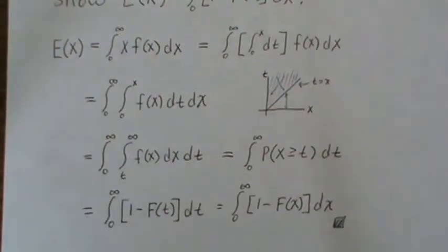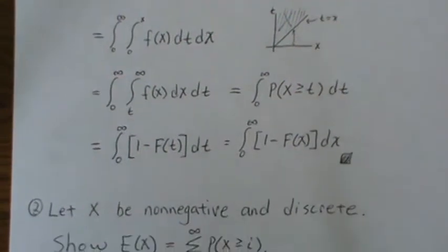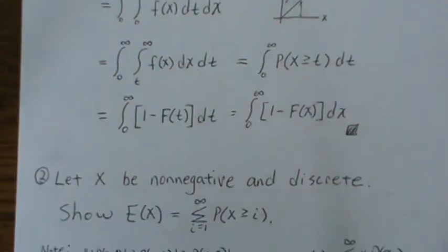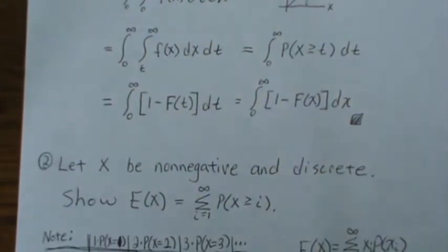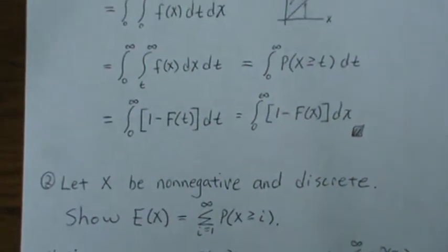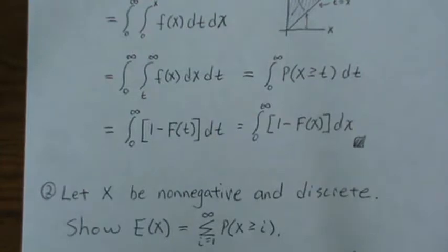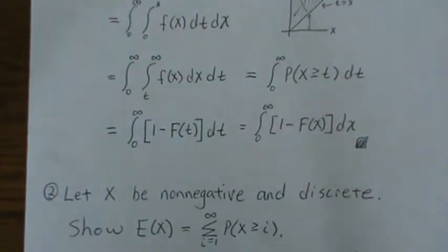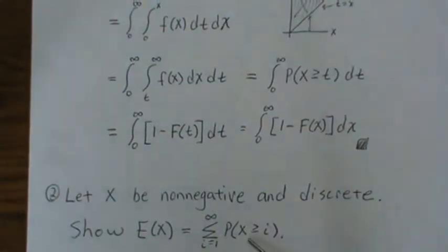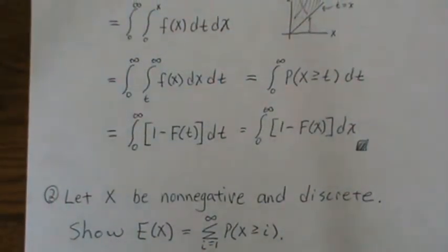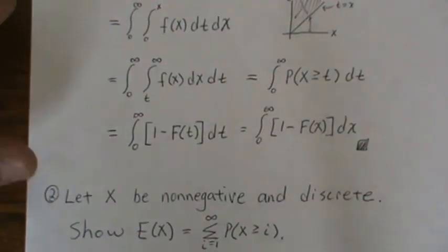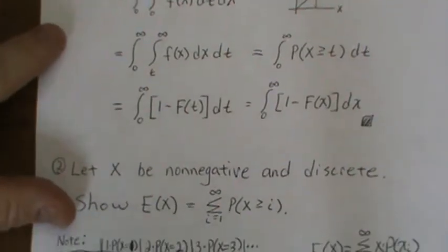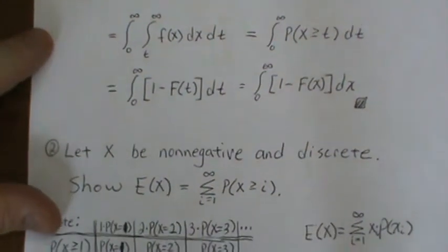Now let's look at the discrete case. We want to show that the expected value is equal to the sum of the probability that x is greater than i. Before we show that, let's look at this matrix.